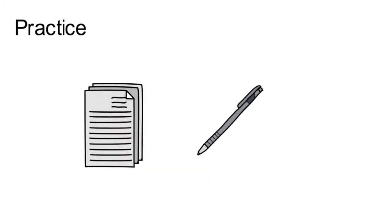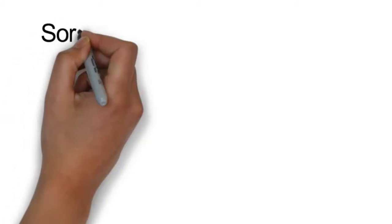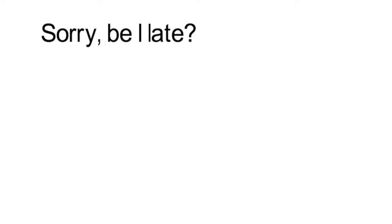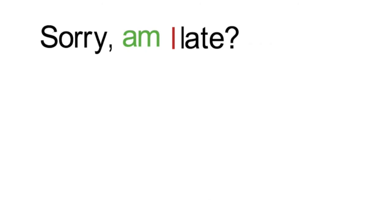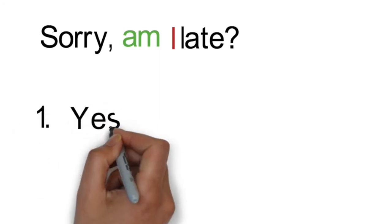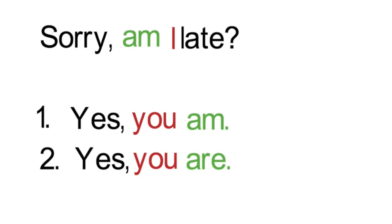Let's practice a few questions. You will need your note-taking sheet and a pen to correct the questions. Sorry, be I late? What is the mistake in this question? What is the correct form of to be that goes with I? It should be Am, so the question should be Am I late? How would you answer this? Choose the correct answer. The correct answer should be Yes, you are because are is the correct form of the verb to be for you.